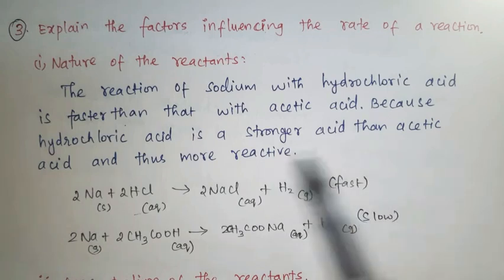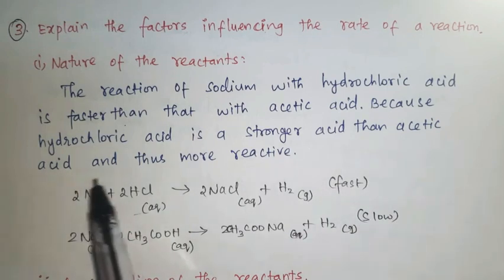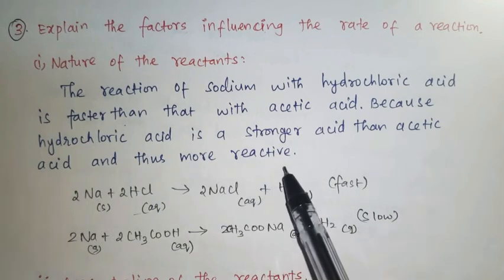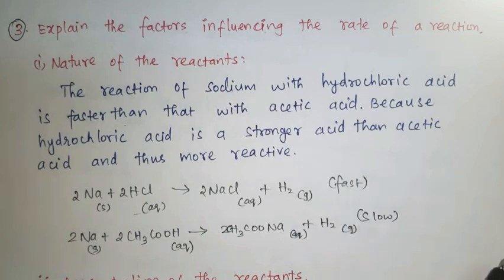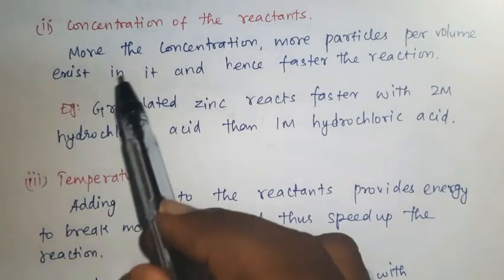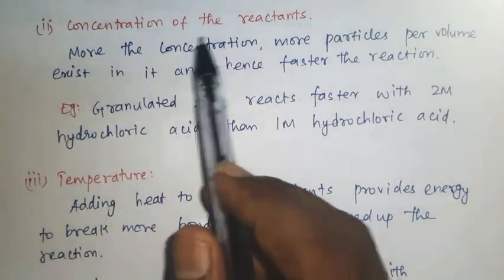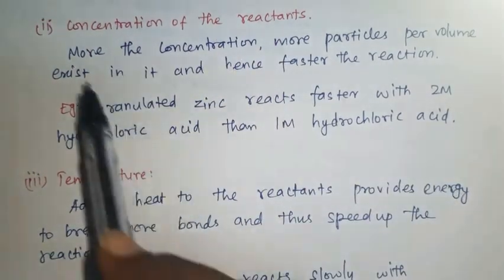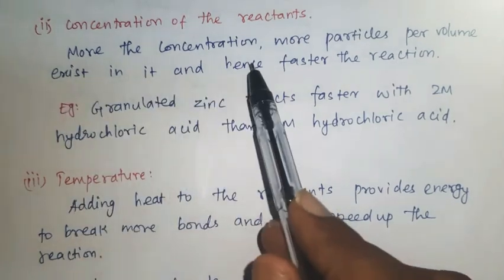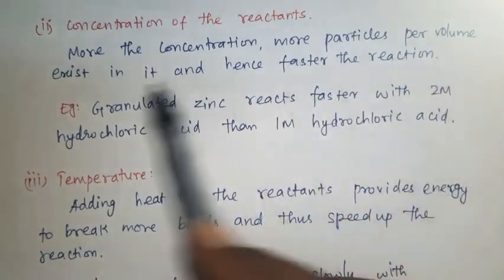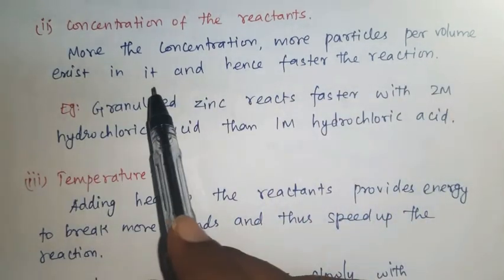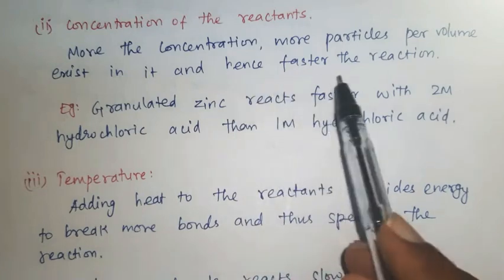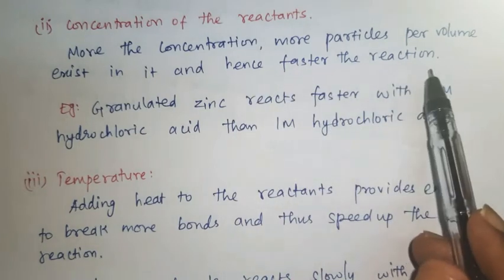Hydrochloric acid is a stronger acid than acetic acid and thus more reactive. Second factor: concentration of the reactants. More the concentration, more particles per volume exist in it, and hence faster the reaction.